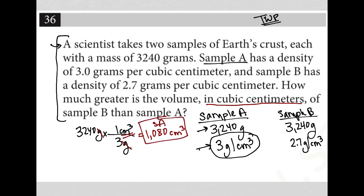I'm going to do the exact same thing with sample B. So I'll choose a different color, but take my 3,240 grams, multiply that by the density, this time 2.7 grams on bottom. That goes on bottom so that my grams can cross out.